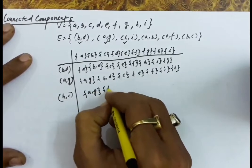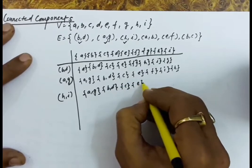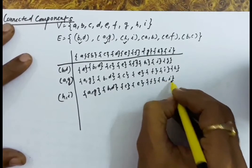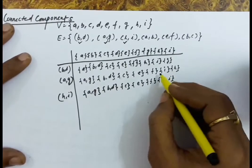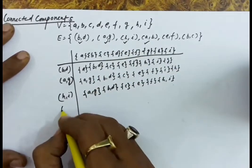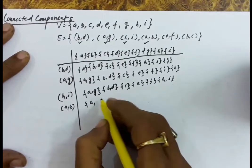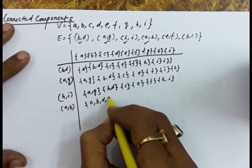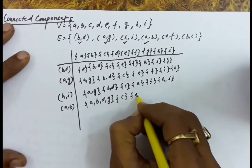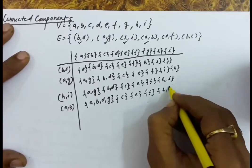After uniting H and I, the original sets H and I are deleted. The next edge is A-B — since A is now in the set {A, G} and B is in the set {B, D}, these two will be combined into {A, B, D, G}. Remaining sets at this point: C is a different set, E is a different set, F is a different set, and H-I is a different set.